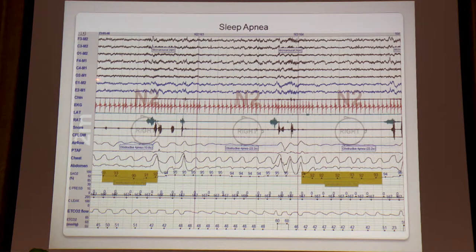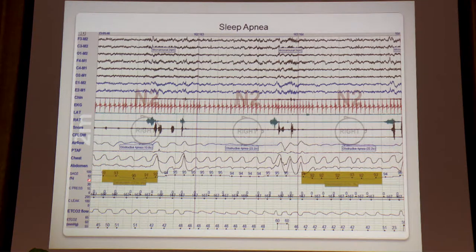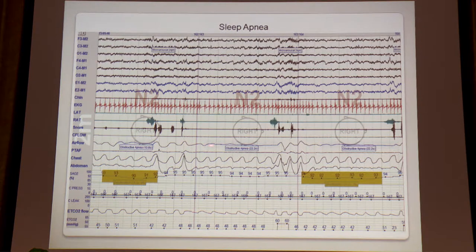Here's a PSG slide of obstructive sleep apnea. The top channels are EEG. Looking at the airflow channel and the chest and abdomen belts, and the SAO2 oxygen level: this patient stops breathing — complete collapse of the airway — oxygen level drops 4%, and there's an EEG arousal. He snorts awake, complete collapse again, oxygen drops again — over and over all night long.